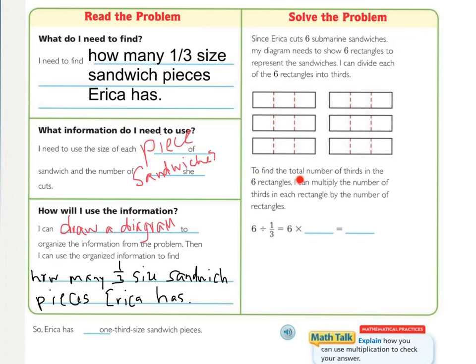Then, to find the total number of thirds in the six rectangles, I can multiply the number of thirds in each rectangle by the number of rectangles. We have how many thirds in this? There are three thirds in each rectangle that represents the sandwich. So how many actual third pieces are there? There are 18.